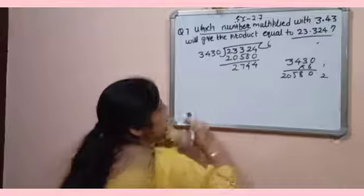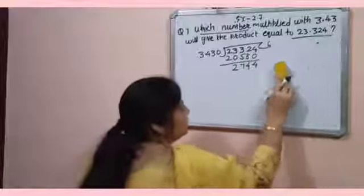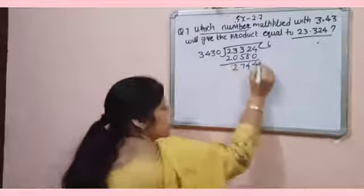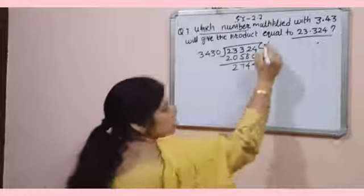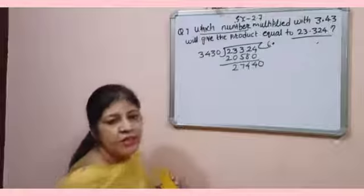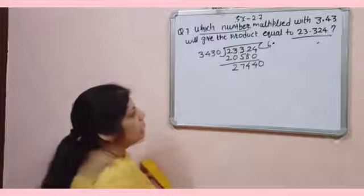And now for converting to decimal form, you have to write 0 here and write decimal here. Now check.